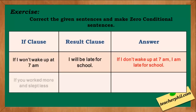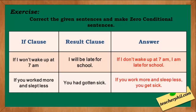The second one: if you worked more and slept less, you had gotten sick. The answer is: if you work more and sleep less, you get sick. The IF clause 'if you worked more and slept less' is in the past simple, while the RESULT clause 'you had gotten sick' is in the past perfect. We need to change them into present simple — that's why we have: if you work more and sleep less, you get sick.